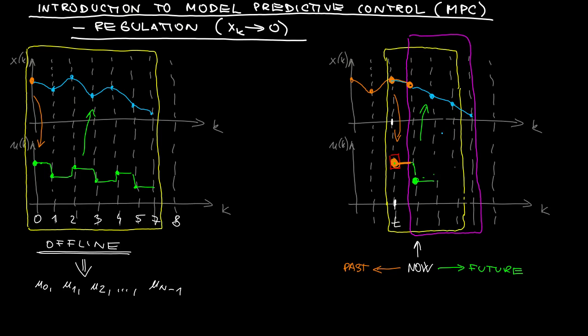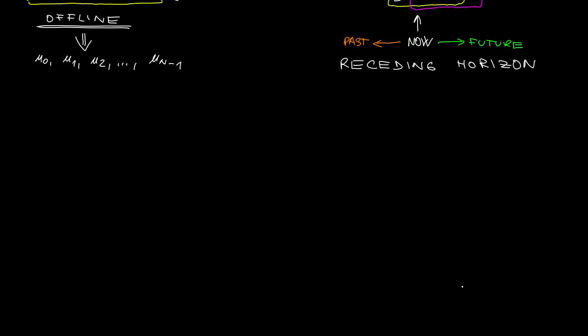We keep just the first sample in the sequence of control samples, and we again shift the time window to the right. This strategy is called receding control, receding horizon control strategy, and this is now regarded essentially as synonym to model predictive control.